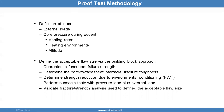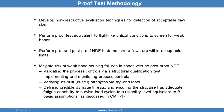The approach for defining acceptable flaw size requires first defining the loads: external loads, core pressure during ascent, vent rate, heating environment, and altitude. Then define the acceptable flaw size using the building block approach. You want to characterize the fascia failure strength, the core-to-fascia interfacial fracture toughness, and determine the strength reduction due to environmental conditioning.